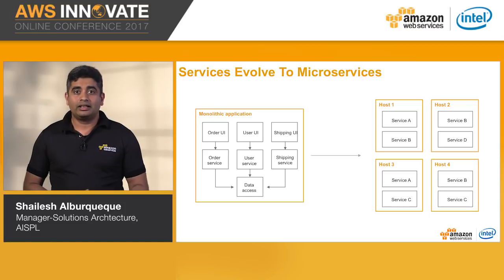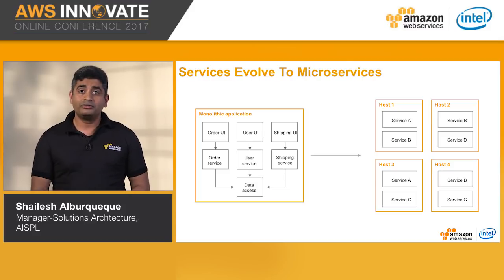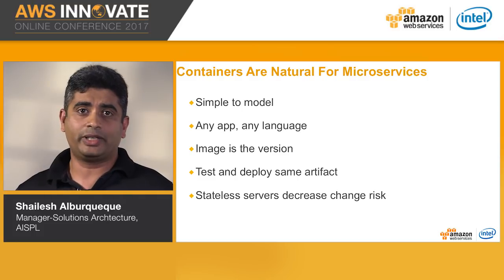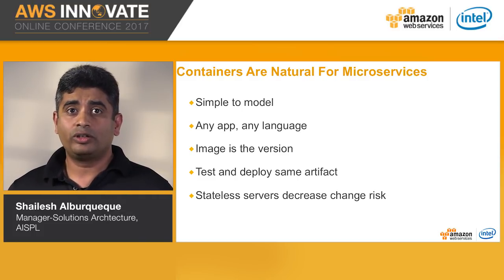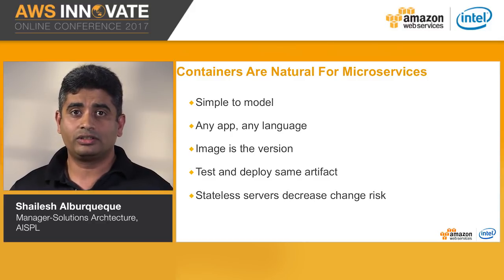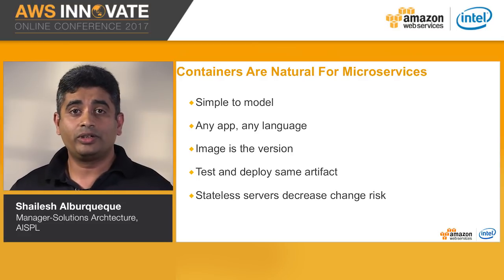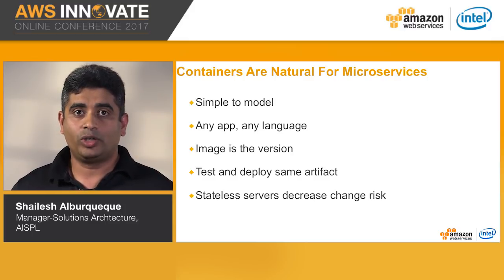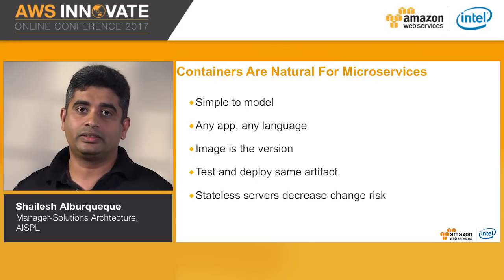If the development teams are aligned along these services, they can independently update their application, release new features, and deploy them at their own frequency without affecting other services. Containers and Docker are a natural fit for this pattern of microservices. Containers make services simple to model — the application and all its dependencies are packaged into a single image using a Docker file. The image is a versioned artifact that can be stored in a repository just like your source code, making applications easy to test and deploy. Containers also simplify deployment; it is straightforward to deploy stateless services where each new deployment is a new set of containers, reducing any dependencies or conflicts with other services.